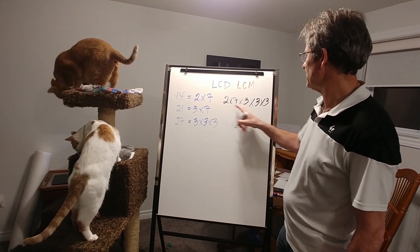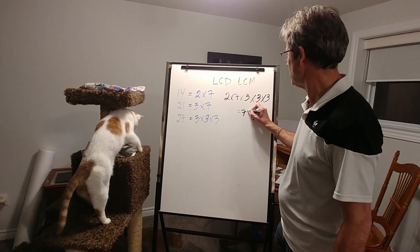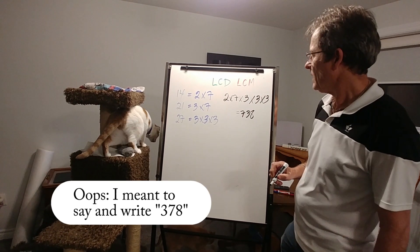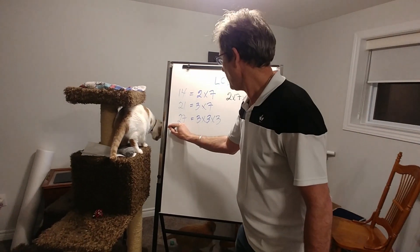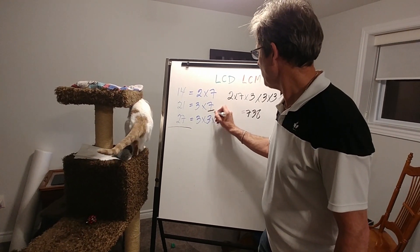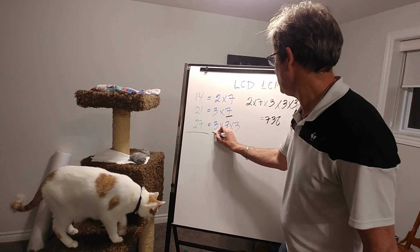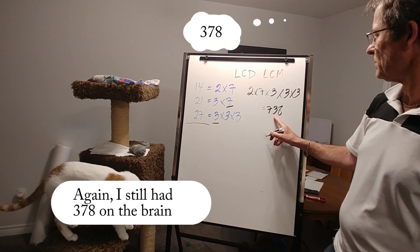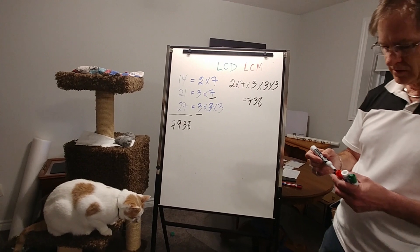Now if I multiply that out — 14 times 27 — that's 10 times 27 plus another 4 times 27, so I think that's 738. And if I want to find out what I would get if I just multiplied those numbers, the easiest way is to multiply by the 7 I didn't use and the 3 I didn't use — in other words, multiply this by 21. So if I multiply this by 20 and add one more, I'm pretty sure that's 7,938. You can always check on a calculator.